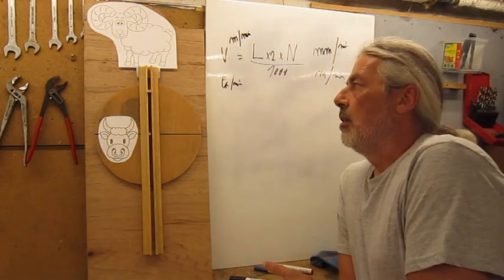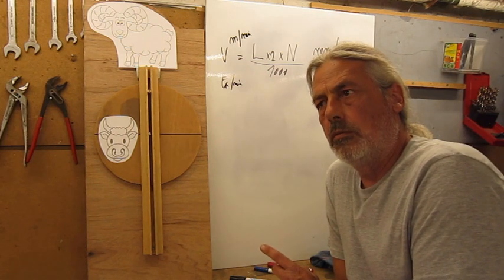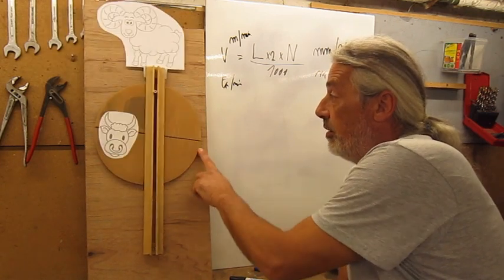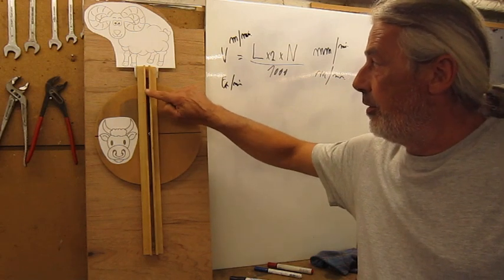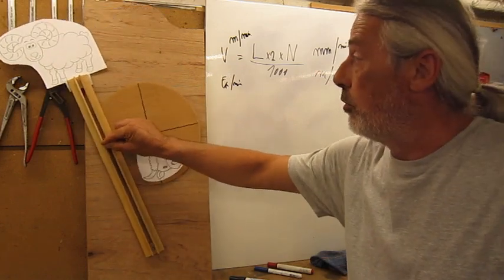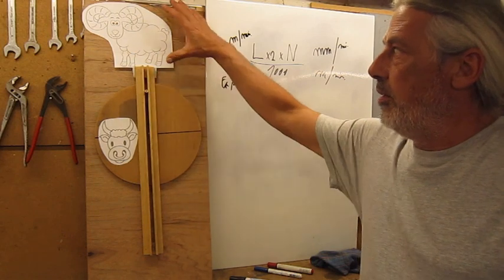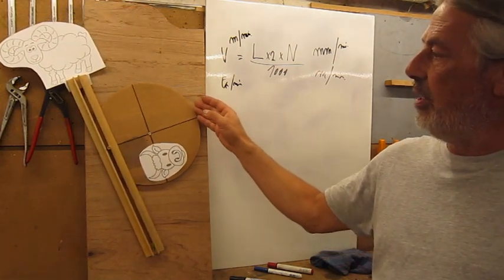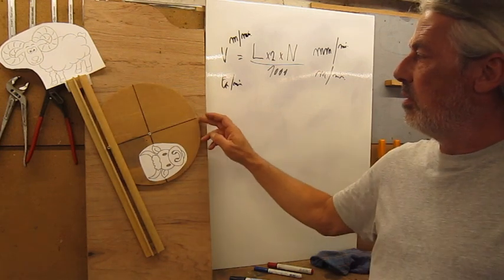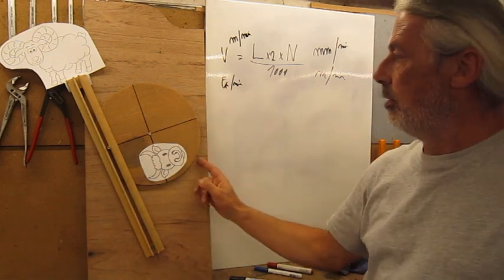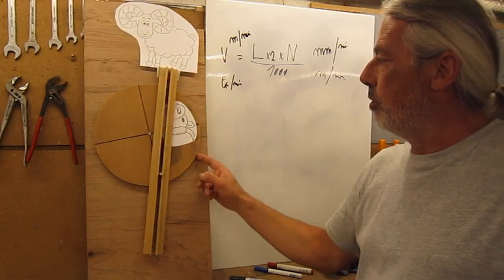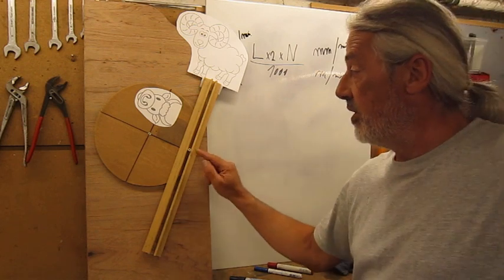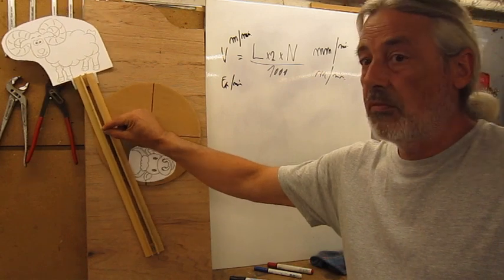With this model it will be more clear. Here we have the shaper with the bull gear; fixed to the bull gear is a crank pin, and the crank pin moves the rocker arm. Up here is the ram with the cutting tool. When we turn the bull gear we reach the end of stroke — the ram doesn't move anymore. We can see that this line is not horizontal. Then the backstroke begins and we reach the end of the backstroke. This line is also not horizontal, which means the cutting stroke is slower than the backstroke.